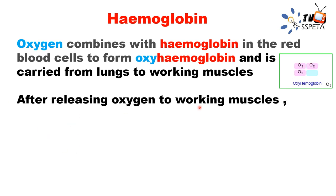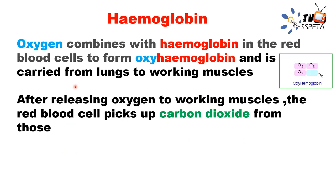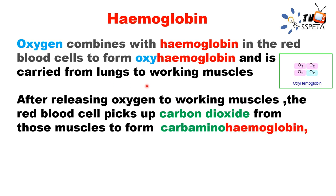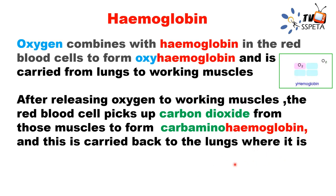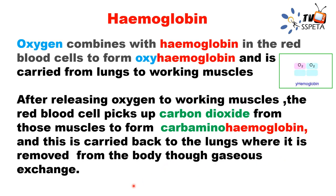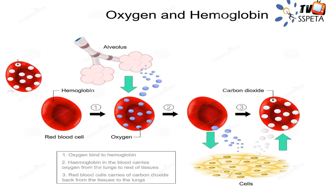After releasing oxygen to the working muscles, the red blood cells pick up carbon dioxide — the byproduct of respiration. We then call it carbaminohemoglobin. This is carried back to the lungs where the carbon dioxide is removed from the body through gaseous exchange.